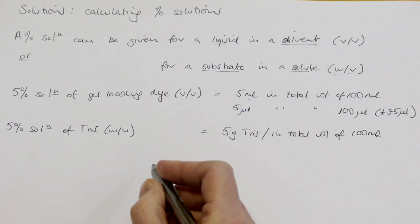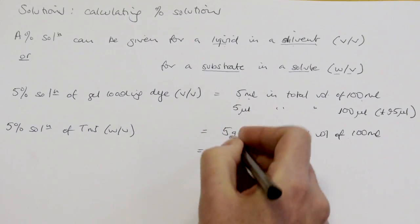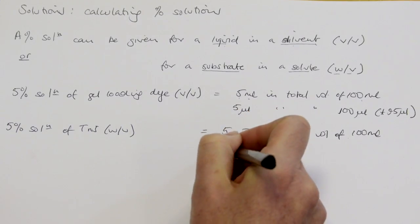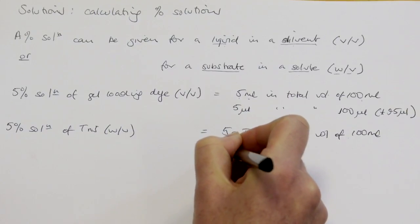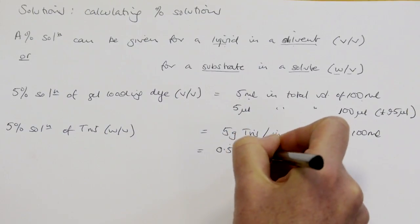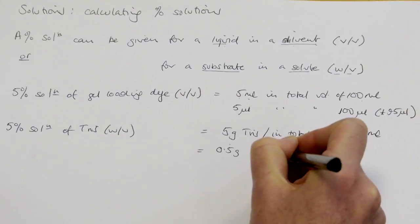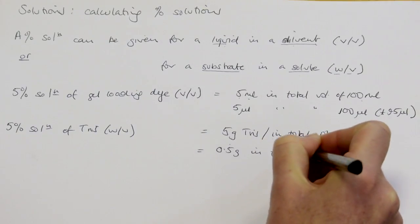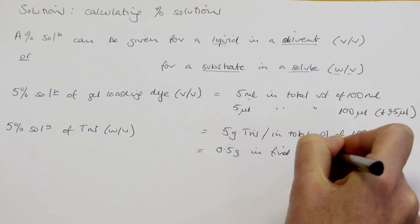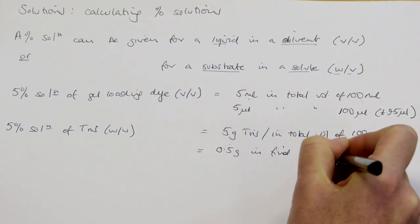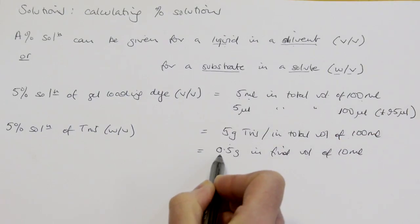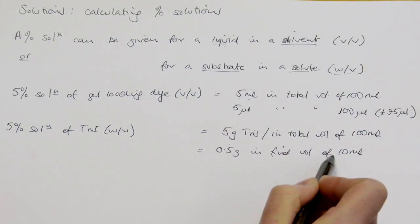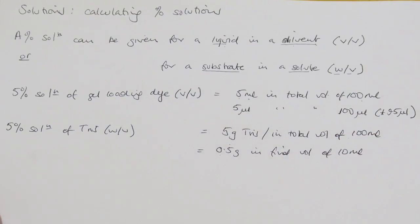Again, the volume here could have been scaled down. It could equally have been 0.5 grams in a final volume of ten mils. It's still expressed as a percentage of the final volume.